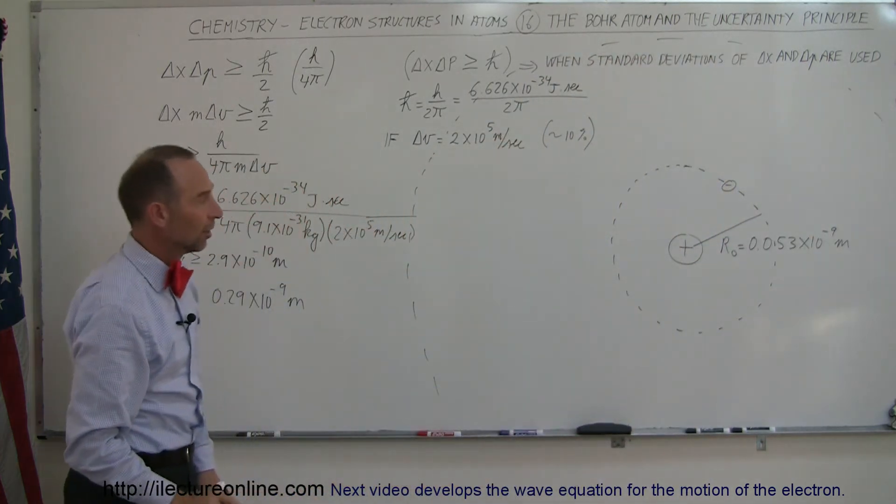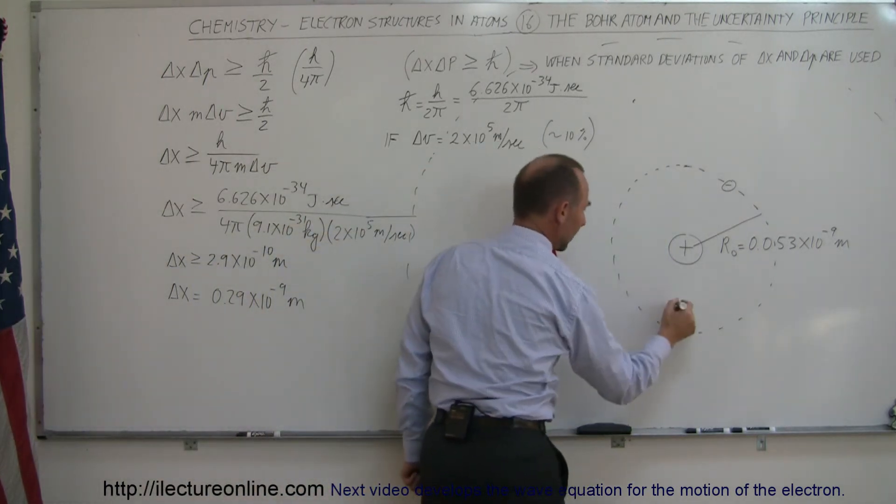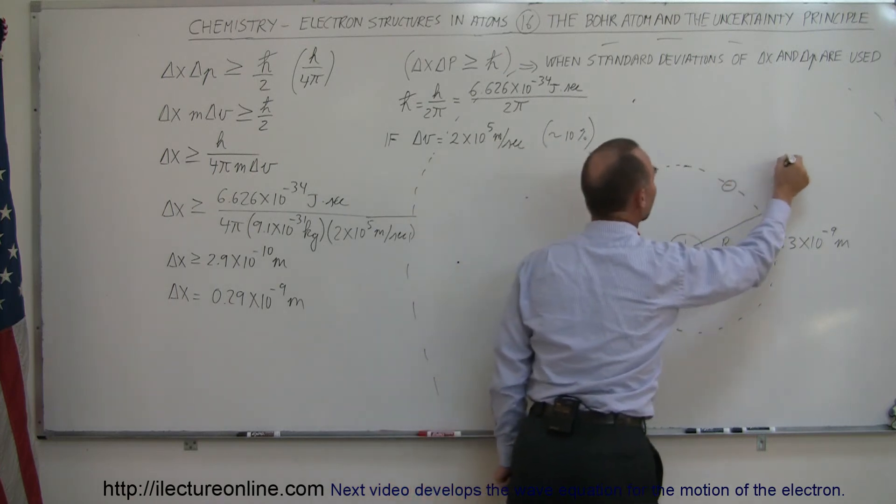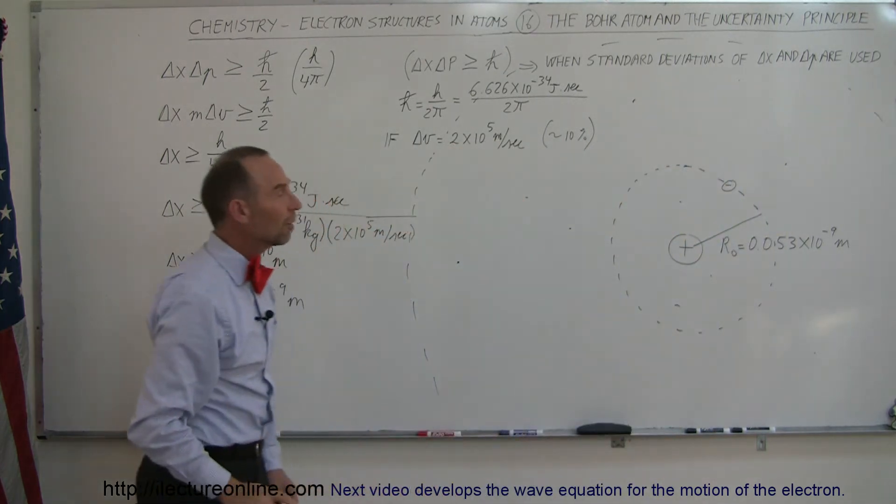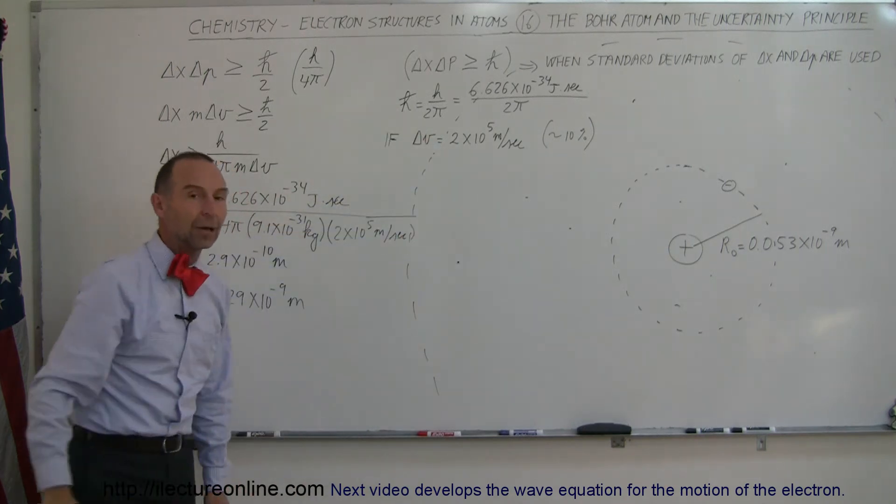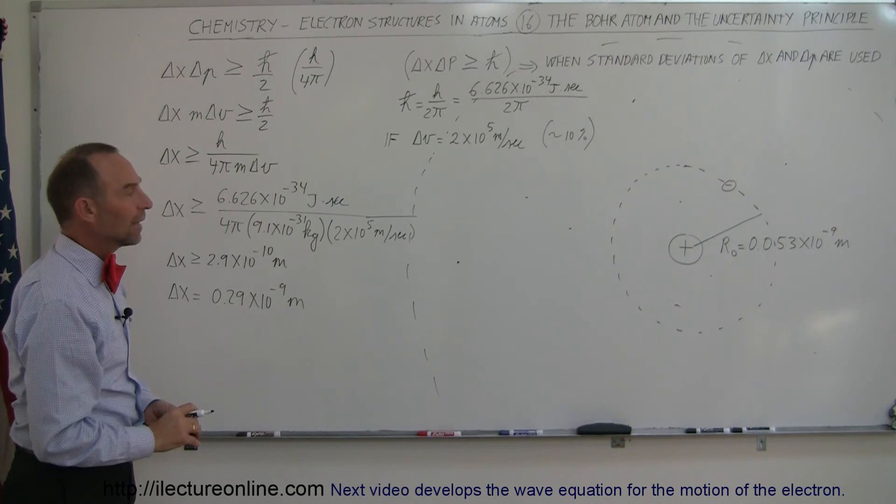The position where the electron can be is somewhere in this huge volume where the radius is 5 times the actual radius of the atom. So in other words, what we're saying is we could find the electron over here, we could find it over there, maybe there, maybe there, maybe there, there. We really don't know where the electron is going to be. It can be anywhere in that region, much greater than the actual size of the atom itself.